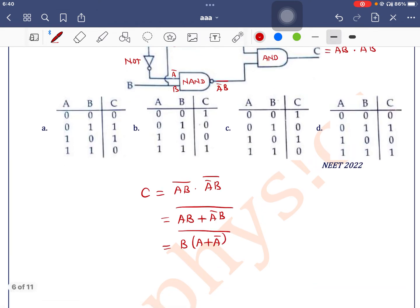Now A or Ā is written as 1. So it will be B̄. So C is equal to B̄.